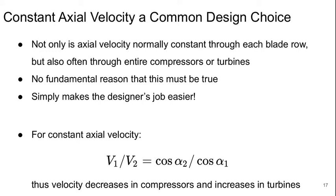A common design choice for axial turbomachines is to assume, or to design for I should say, the axial velocity to be constant throughout the whole machine, as well as through each blade row. There's really no reason this has to be the case. This is just something that we tend to do to make the designer's job easier. And if we have constant axial velocity, then the overall velocities are just going to be related by the flow angles. So the velocity is going to decrease in compressors and increase in turbines.